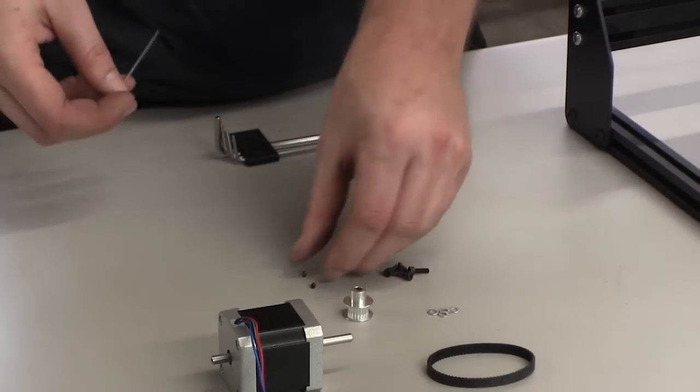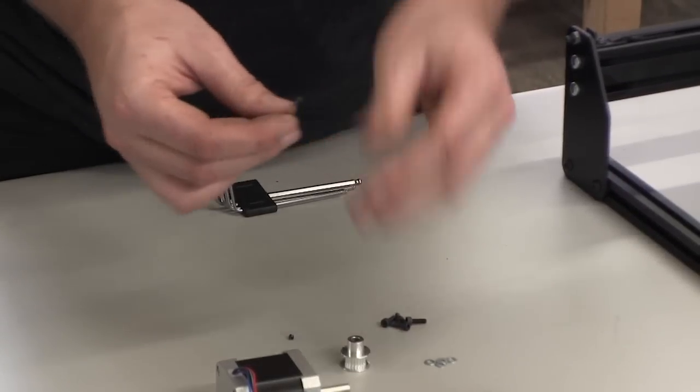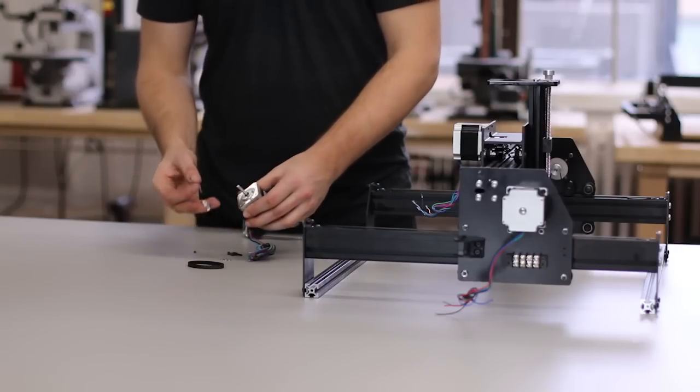Now we're going to mount the Z-axis NEMA 17. You'll put the pulley on the NEMA 17 first.